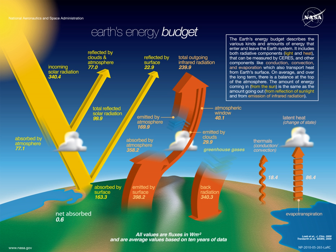In spite of the enormous transfers of energy into and from the Earth, it maintains a relatively constant temperature because, as a whole, there is little net gain or loss. Earth emits via atmospheric and terrestrial radiation shifted to longer electromagnetic wavelengths to space about the same amount of energy as it receives via insolation.